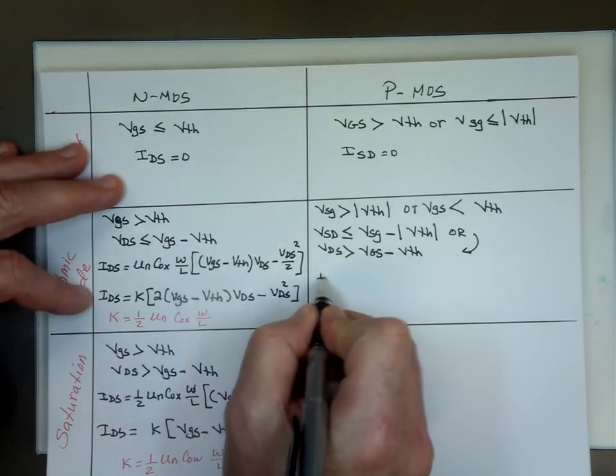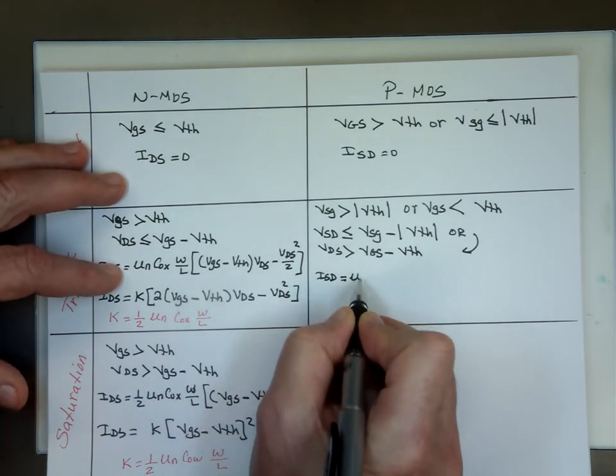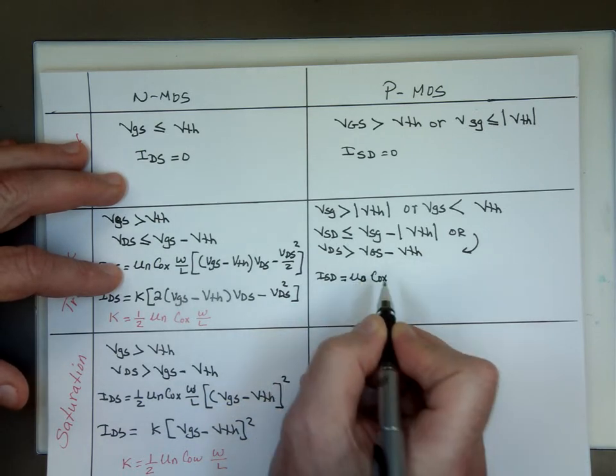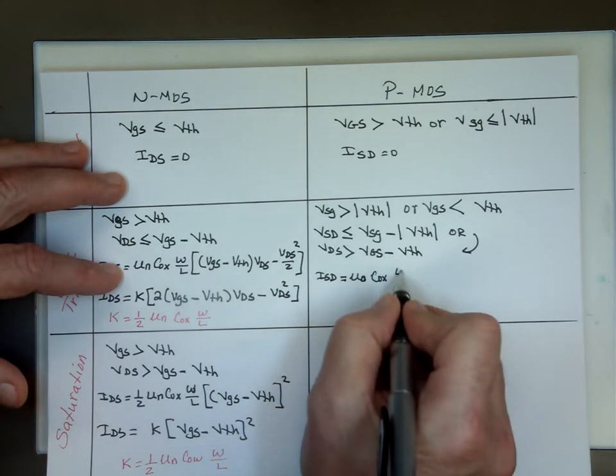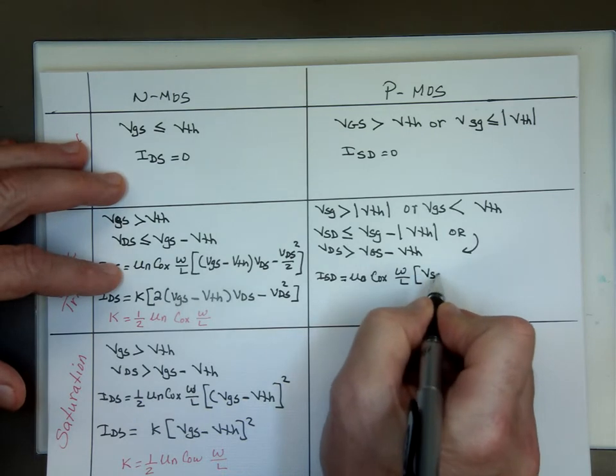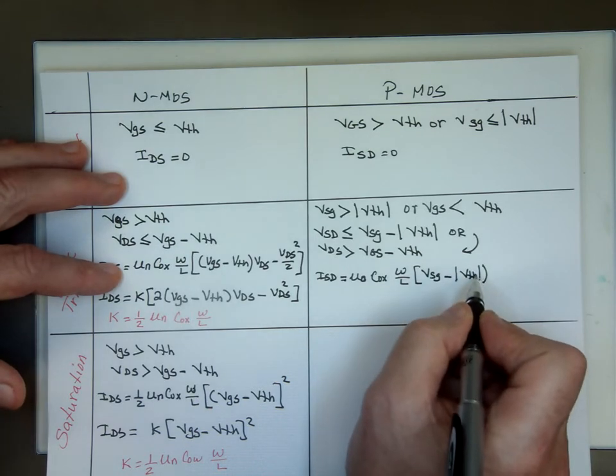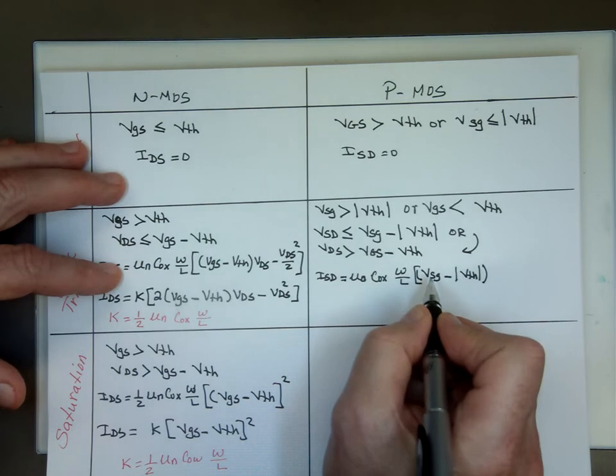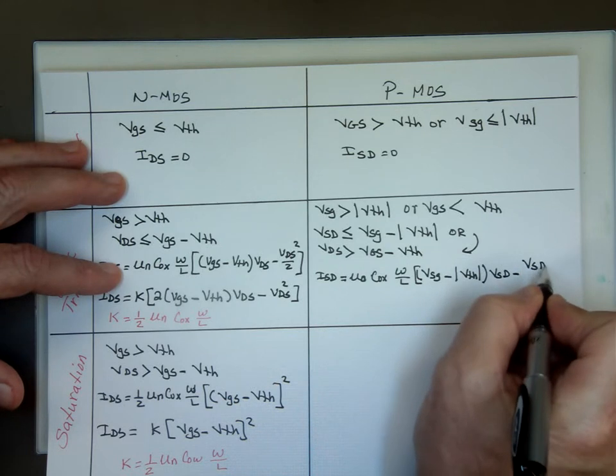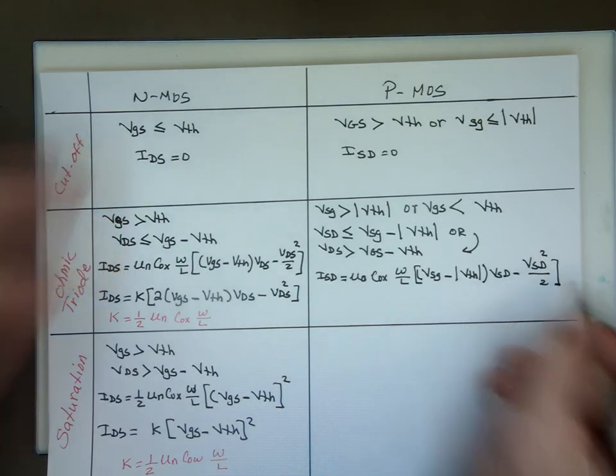And here ISD will equal to μn or μ0, depends which book you have there. Cox, sometimes I use μ0, sometimes μn when I do these problems. W over L, VSG minus the absolute value of V threshold times VSD minus VSD squared over 2. Again this is really K here.